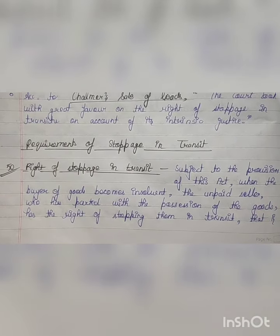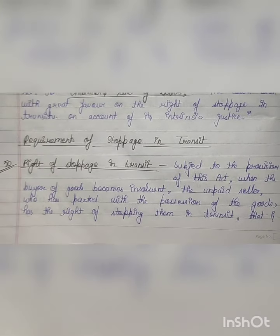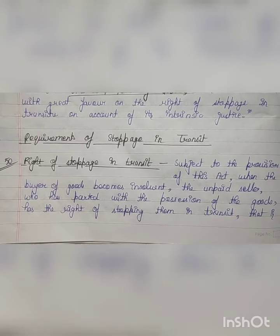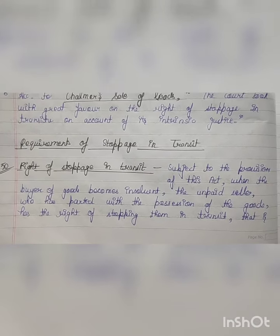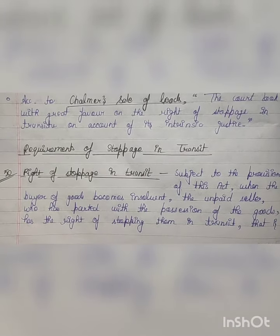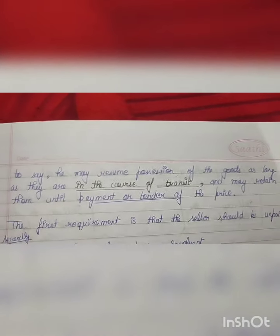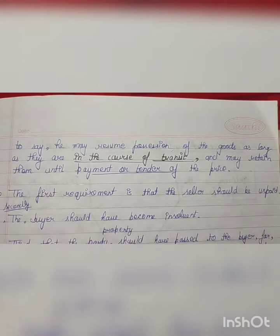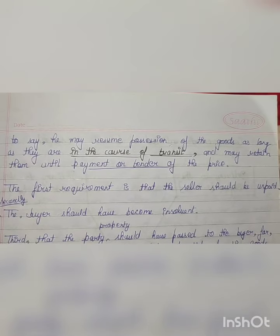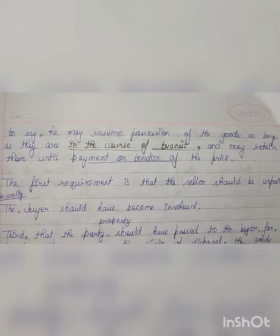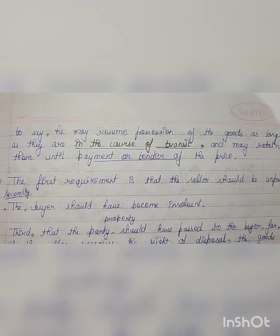The requirements of stoppage in transit under Section 50: when the buyer of goods becomes insolvent, the unpaid seller who has parted with the possession of the goods has the right of stopping them in transit. He may resume possession of the goods as long as they are in the course of transit and may retain them until payment or tender of the price.